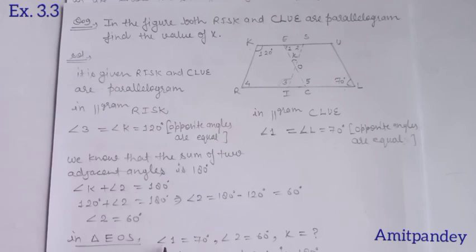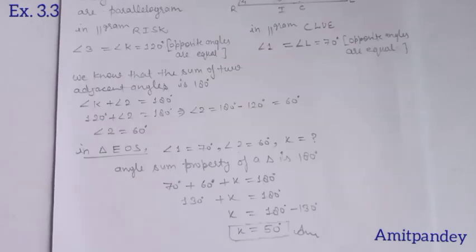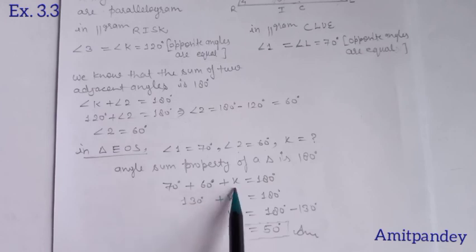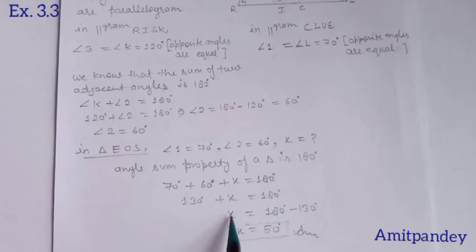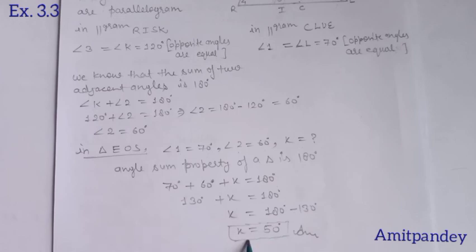In triangle EOS, angle 1 is 70°, angle 2 is 60°, and we have to find angle x. Using the angle sum property of a triangle: 70 plus 60 plus x equals 180°. Adding 70 and 60 gives 130 plus x equals 180°. So x equals 180 minus 130 equals 50°. Therefore, x equals 50° is the required answer.